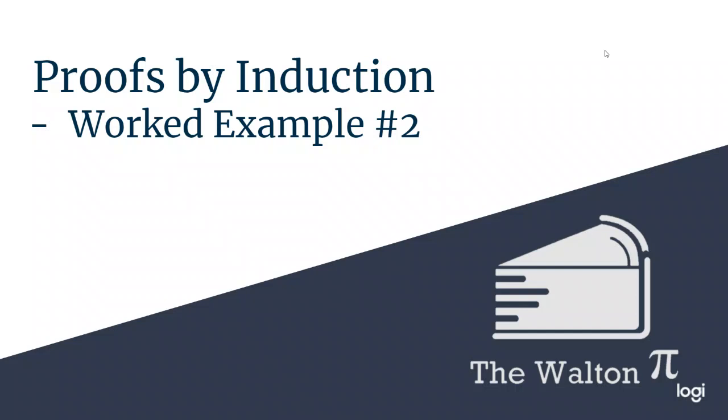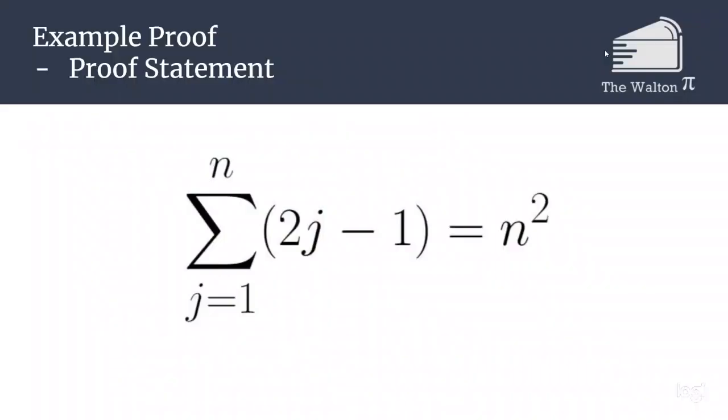Welcome to the Walton Pi! Today we are going to go through another inductive proof. This time, we are going to be looking at the sum from j equals 1 to n of 2j minus 1, and we will show that this is always equal to n squared.